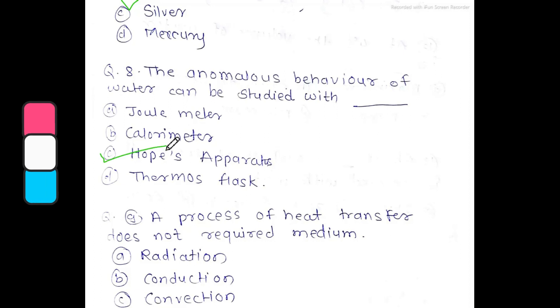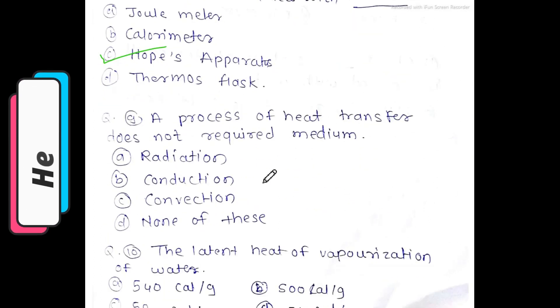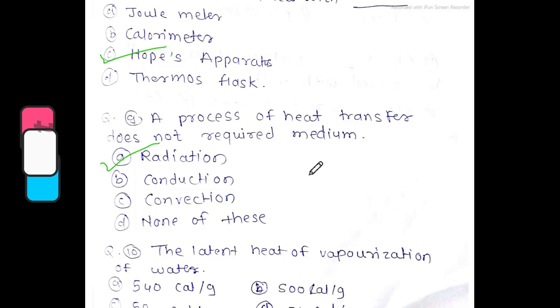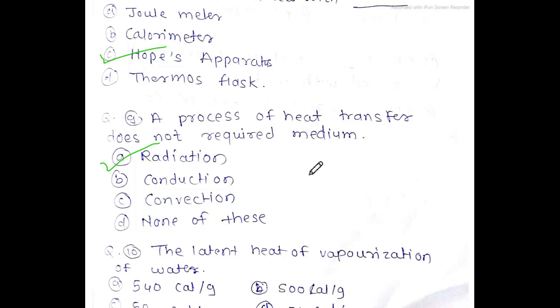Next MCQ: which process of heat transfer does not require a medium? For example, the Sun heats the Earth across the vacuum of space — there is no medium. The process that transfers heat without a medium is radiation. Radiation is the correct answer.